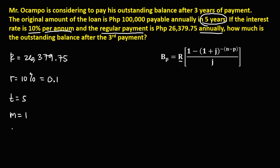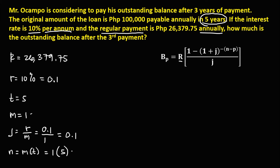For the number of periods, N, we have M times the time. Since M is 1 and the time is 5, the number of periods N is equal to 5. For P, since we are solving after the 3rd payment, P is equal to 3. So, solving for N minus P: N minus P equals 5 minus 3, which gives us N minus P equals 2.